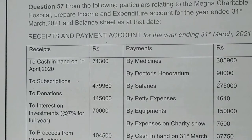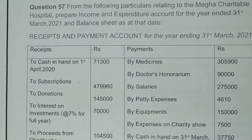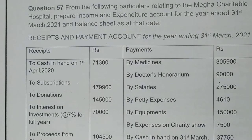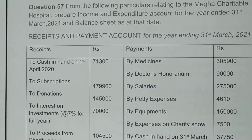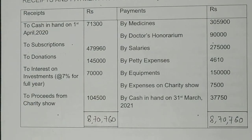Now question number 57, which is the last question of this chapter and also of this video. From the following particulars of Megha Charitable Hospital, prepare the income and expenditure account for the year ending 31st March 2021, and also prepare the balance sheet. The receipt and payment account for 31st March 2021 is given.